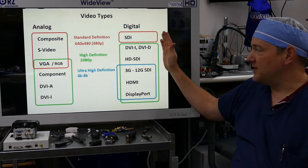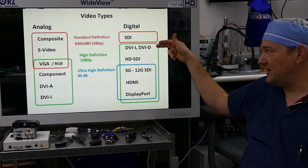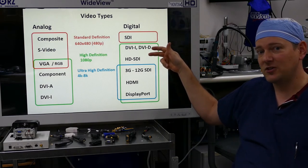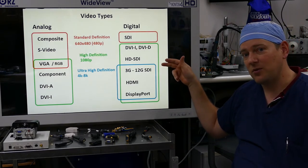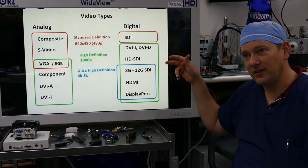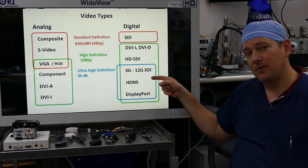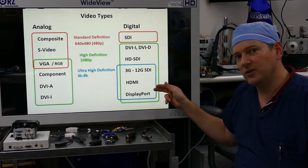On this side, digital, we have SDI, DVI, DVI-D, HD-SDI which is high-definition SDI, 3G through 12G SDI which are up-and-coming high-speed versions, HDMI which everybody is mainly familiar with, and DisplayPort which is mainly used on PCs.